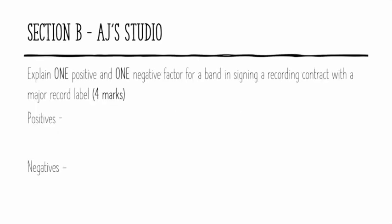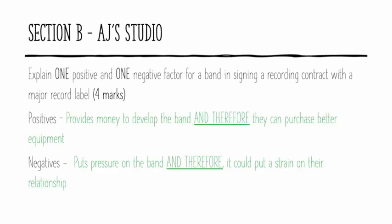This next question wants you to explain one positive and one negative factor for a band signing a recording contract with a major record label. This is four marks but only wants two points — so you'll have to explain each point. My answer: it provides money to develop the band, and therefore they can purchase better equipment. And it puts pressure on the band, and therefore it could put a strain on their relationship. One mark for each point, one mark for each explanation.